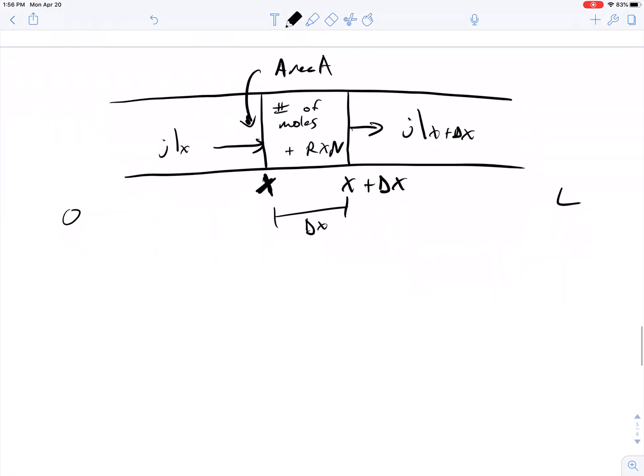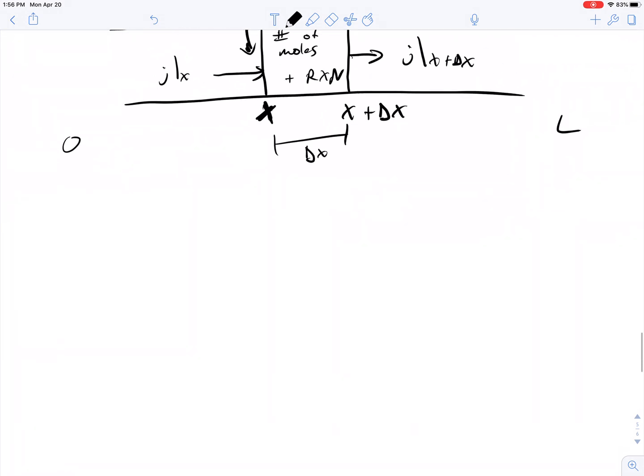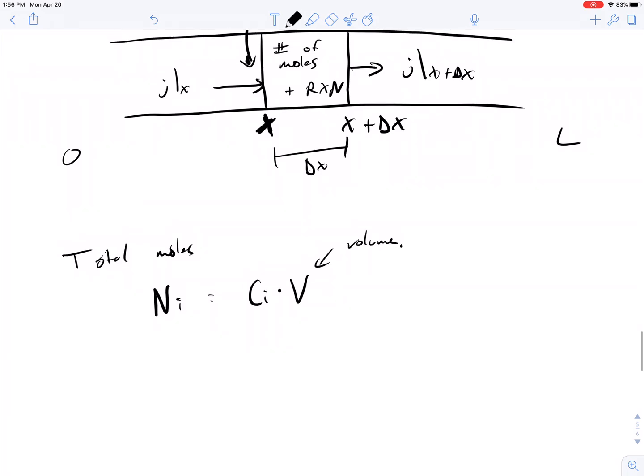So the total number of moles in this little region, total moles would be Ni, which would be equal to the concentration of I in this region times the volume of that region. So volume, according to our diagram, would be the area of the cross-section times the delta X for the length interval.